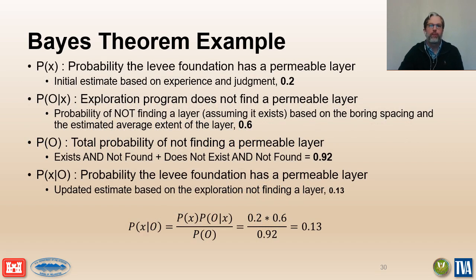Here is a simple example of a probability estimate calculated using Bayes' theorem. We start with an initial estimate of 0.2 for the probability of a permeable layer. We then gather new evidence with an exploration program and estimate the conditional and total probability of our findings based on the boring spacing and the estimated average size of the permeable layer. Plugging these probabilities into Bayes' theorem gives an updated probability of 0.13. The probability does not go to 0 simply because we did not find a layer — the calculation correctly accounts for the fact that a layer may still exist and was simply not detected because the borings were not spaced closely enough.